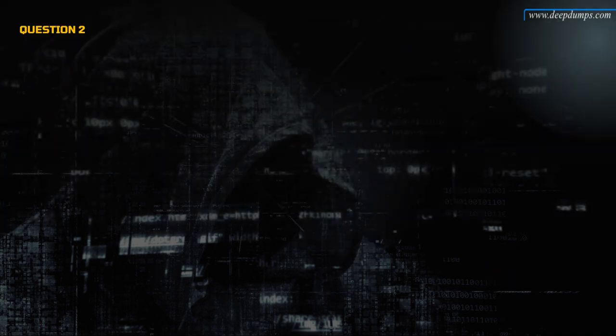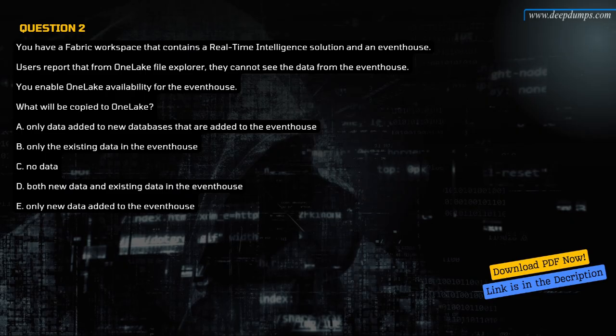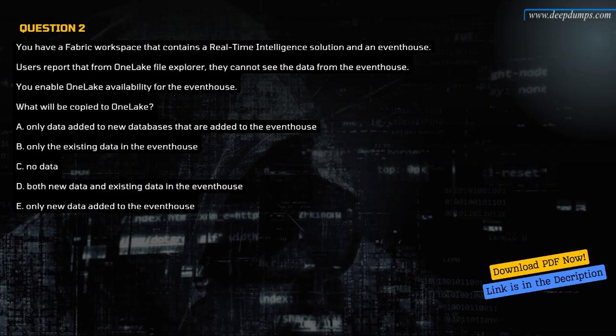Question 2. You have a Fabric workspace that contains a real-time intelligence solution and an event house. Users report that from OneLake File Explorer, they cannot see the data from the event house. You enable OneLake availability for the event house. What will be copied to OneLake? A. Only data added to new databases that are added to the event house. B. Only the existing data in the event house. C. No data. D. Both new data and existing data in the event house. E. Only new data added to the event house.